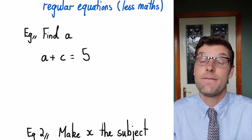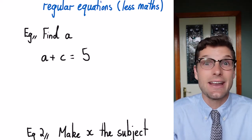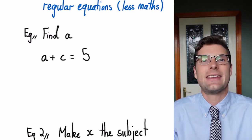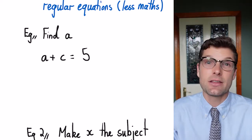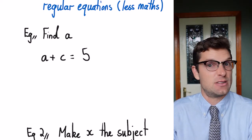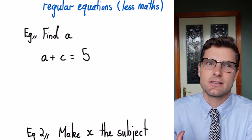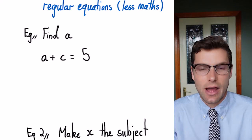But we can still find the value of a. The answer is pretty unsatisfying. We don't really get a good conclusion, but we can get there without having to do any maths. So if I wanted to get a by itself and it was plus some number, I would just minus the number from both sides. Because c is just a number, that's all I have to do.